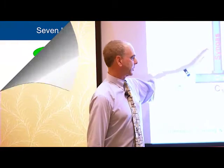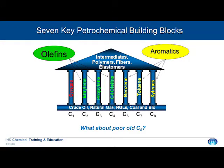So what do I mean by the seven basic building blocks? Well, each pillar is a building block. So if we start with one carbon, we call that building block synthesis gas, or shorthand we call it syngas, which is carbon monoxide and hydrogen. We're not going to really spend time on that today, but that would get us into the methanol and ammonia business.